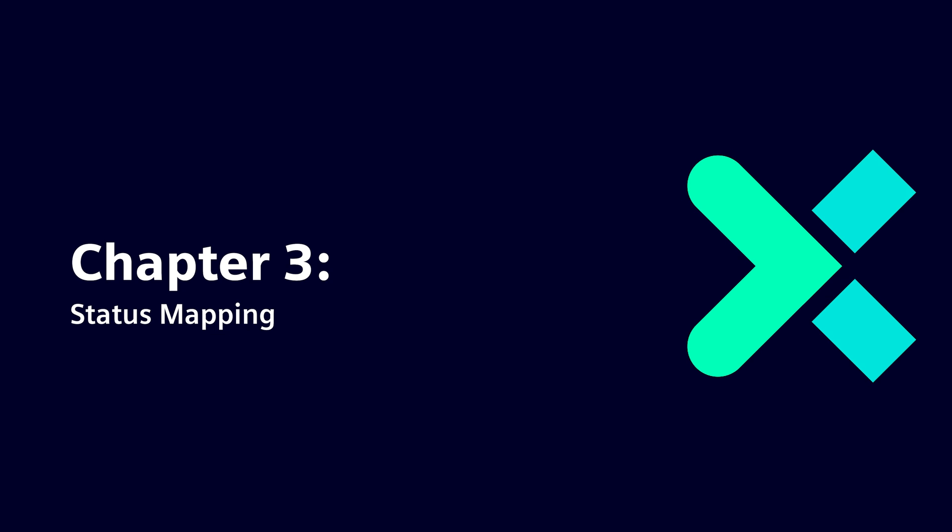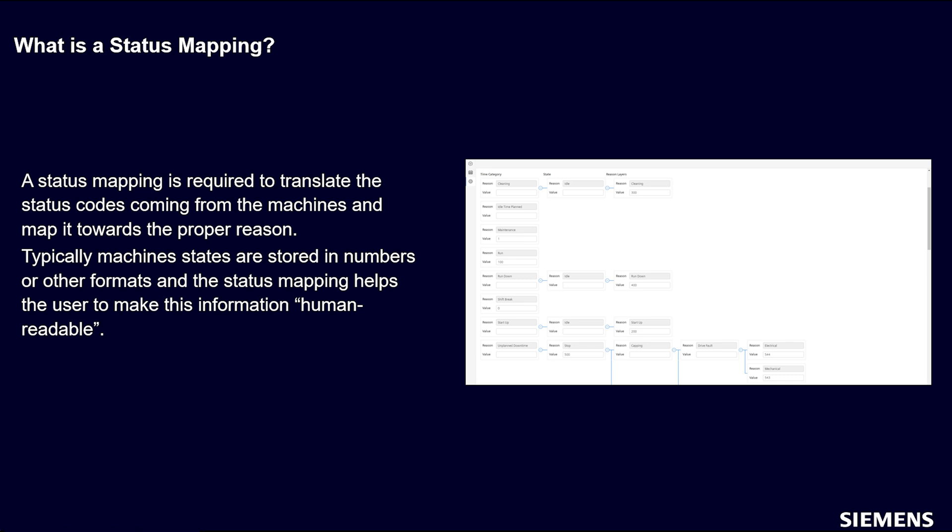Following the reason tree, you need to map the different status codes by configuring a status mapping. The application supports a one-to-many relationship between reason tree and status mapping, meaning you can create multiple status mappings based on one reason tree. As a last important step in understanding machine status, it is crucial to link the different reasons in the reason tree with status codes collected from the machine. Machines typically store state data as numbers or other formats, so the status codes must be translated so that engineers or other users can understand them. For this reason, status mappings for the reason trees are created.